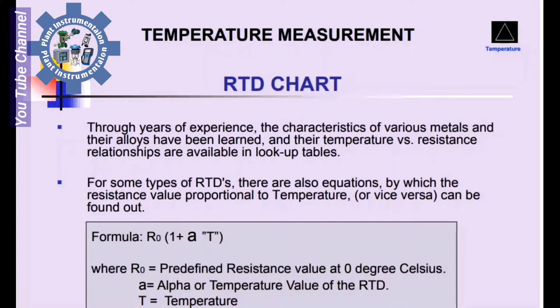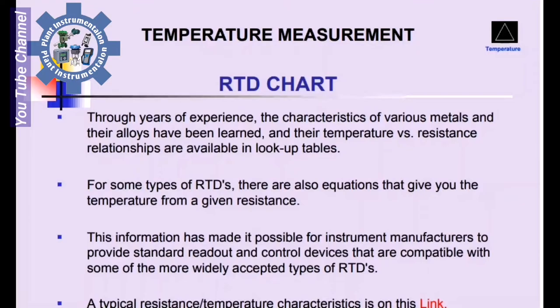For some RTDs, there are also equations by which the resistance value proportional to temperature or vice versa can be found. The formula is R = R0(1 + alpha × T), where R0 is the predefined resistance at 0°C, alpha is the temperature coefficient of the RTD, and T is temperature. This has made it possible for instrument manufacturers to provide standard readout and control devices compatible with widely accepted types of RTDs.